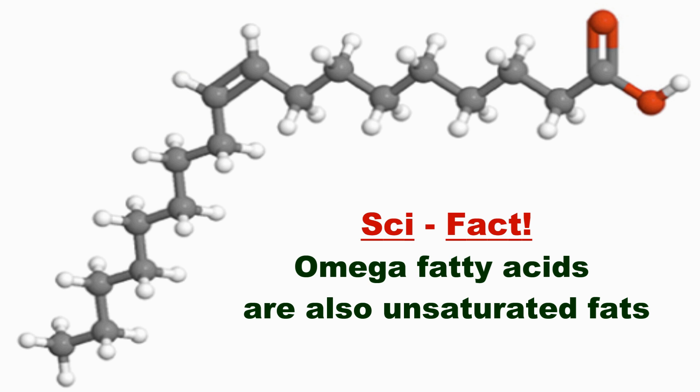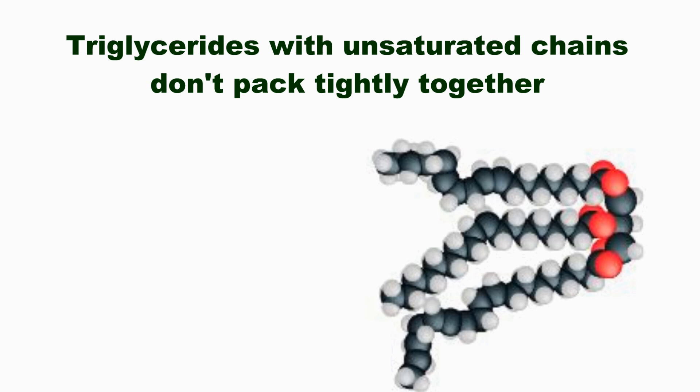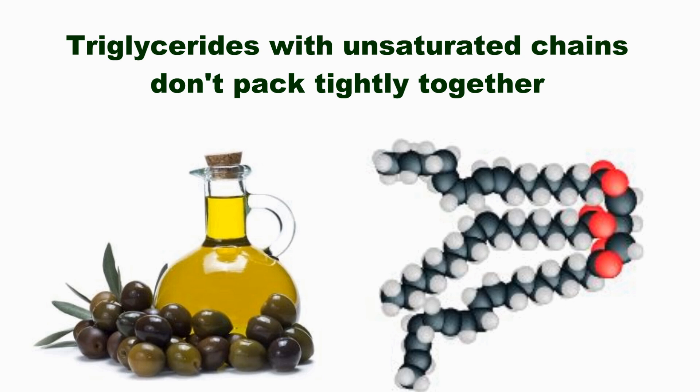Now if you use unsaturated fats to build triglycerides, you would imagine that the bent, curved molecules don't pack very well together. And so what results are liquid forms of storage fat that we call oil. And this is the way plants and fish tend to store fat.